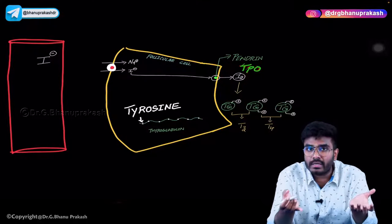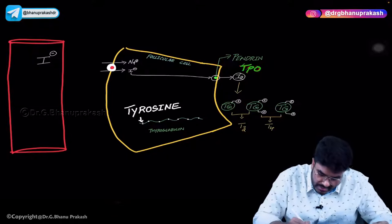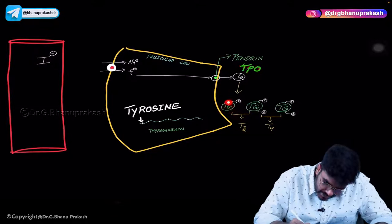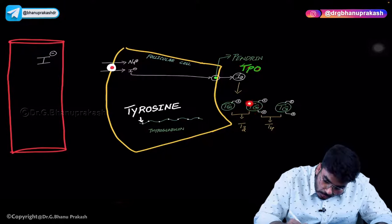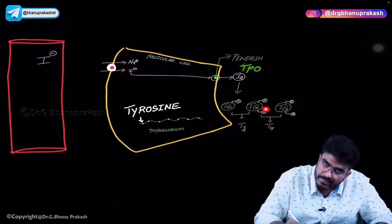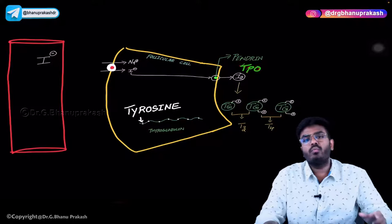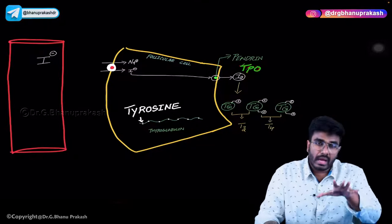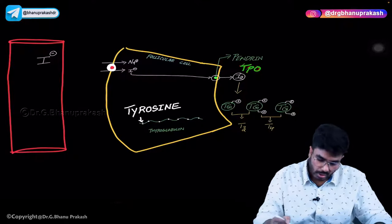Protein is something organic. So we are adding iodine onto thyroglobulin. On the thyroglobulin molecules, iodine is being added — in one molecule there is one iodine, and on other thyroglobulin molecules there are two iodines. This process of adding iodine onto thyroglobulin is called organification.